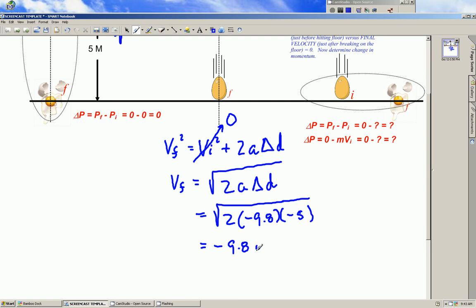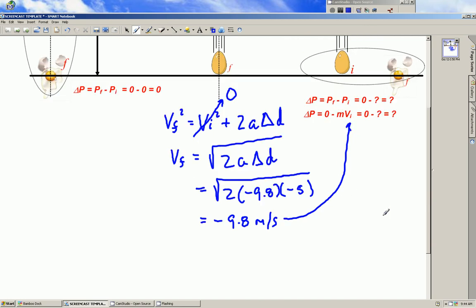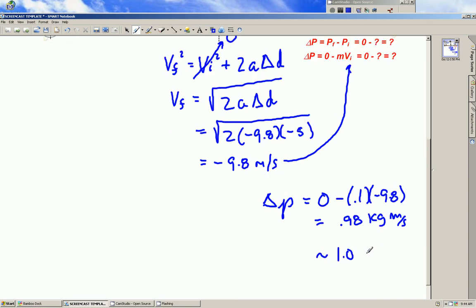We can now plug this final velocity as the actual initial velocity in scenario 2. And so therefore we get a delta momentum, change in momentum, equal to 0 minus 0.1 kilograms times negative 9.8 meters per second. And this comes out to be about 0.98 kilograms times meters per second, or approximately 1.0 kilograms times meters per second. That's your answer.